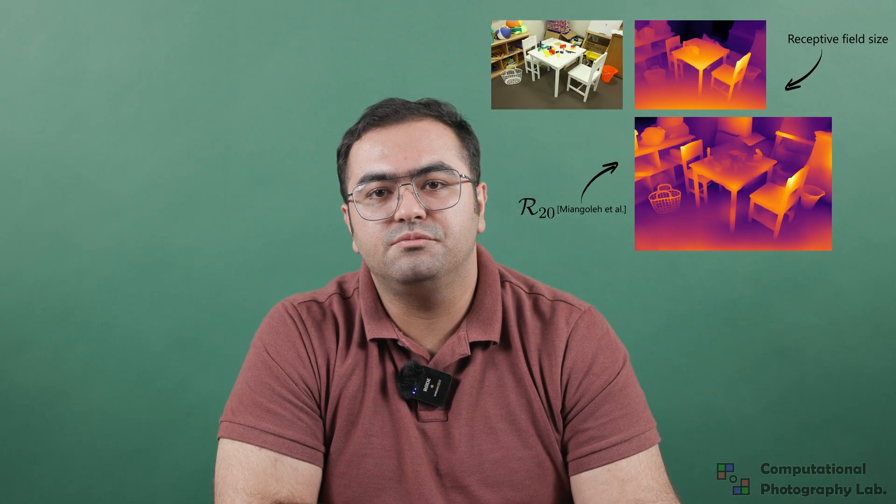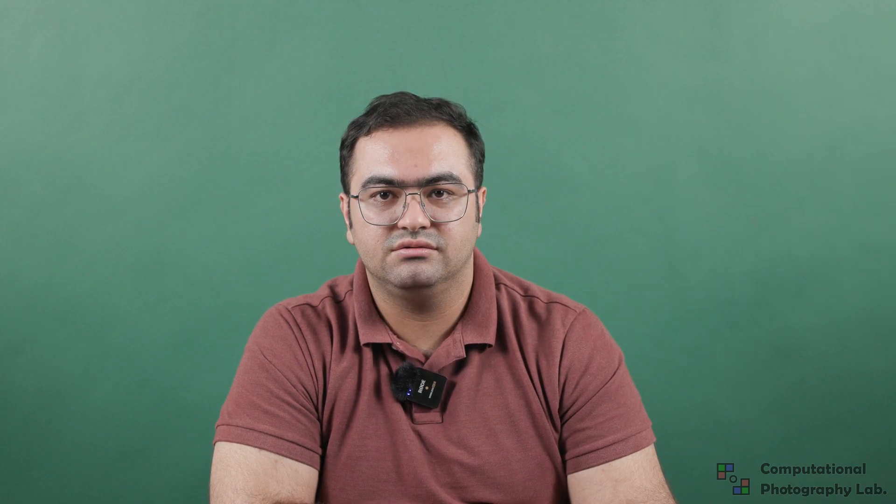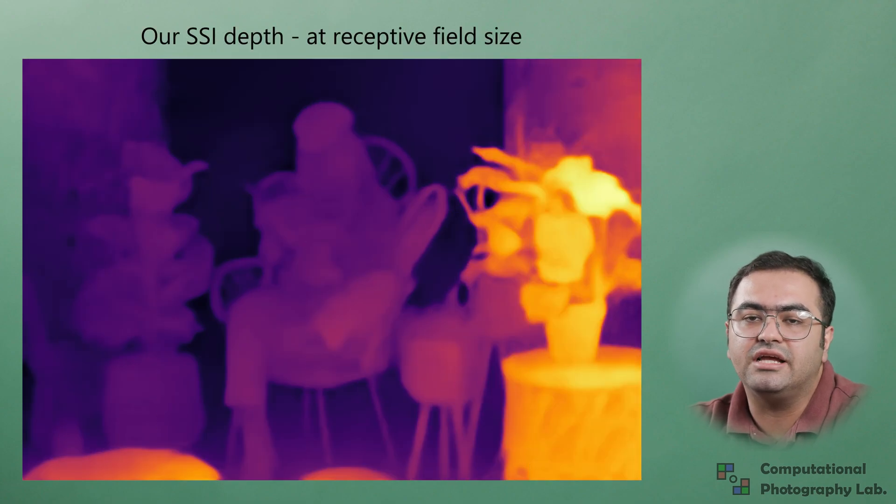With its SSI inputs being highly generalizable, this simplified task has a much lower domain gap between synthetic and real-world images. We only train our scale invariant network on the synthetic dataset of Hypersim and show that our system is able to generate accurate geometry in the wild. Our sparse loss significantly enhances the details in SSI estimations.